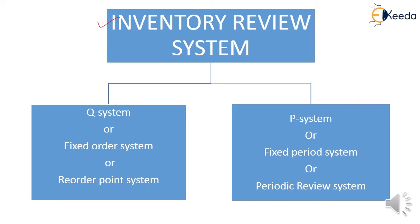The inventory review system is classified into two categories. The first one is the Q system, also known as a fixed order system or reorder point system. The second one is the P system, also known as a fixed period system or periodic review system. So let's start.